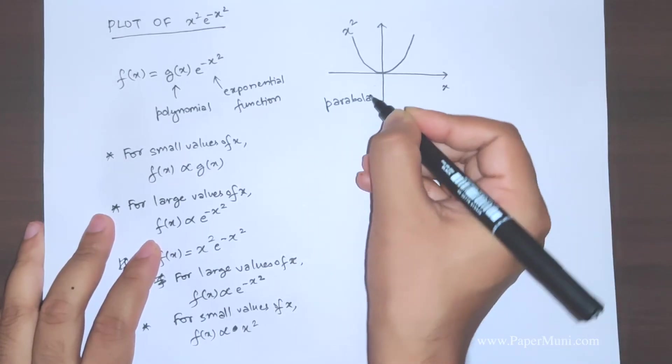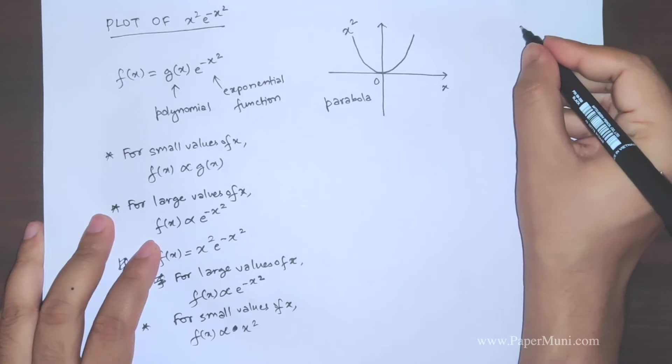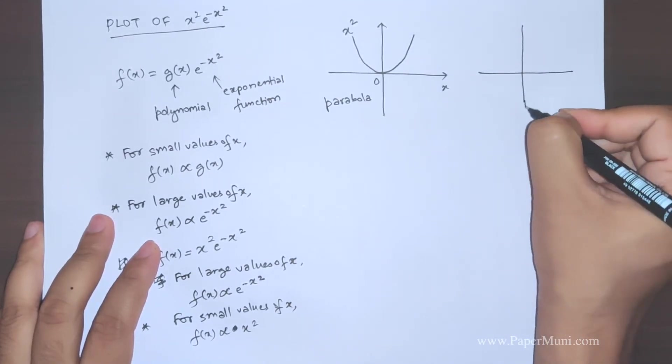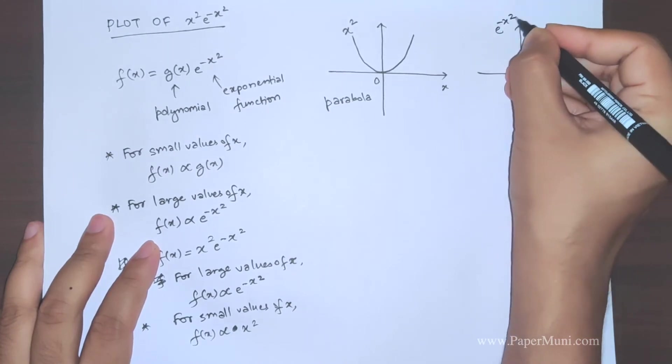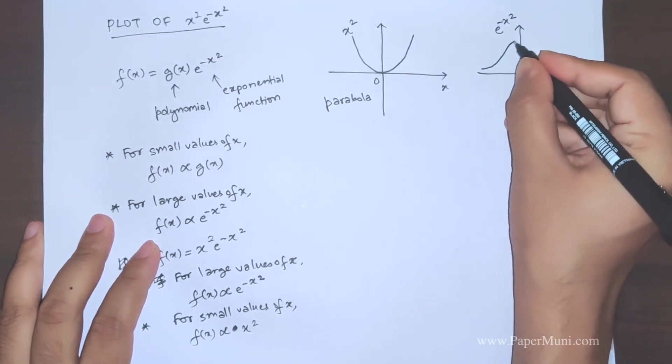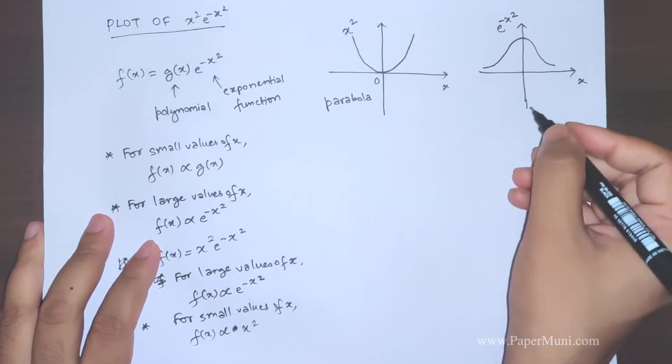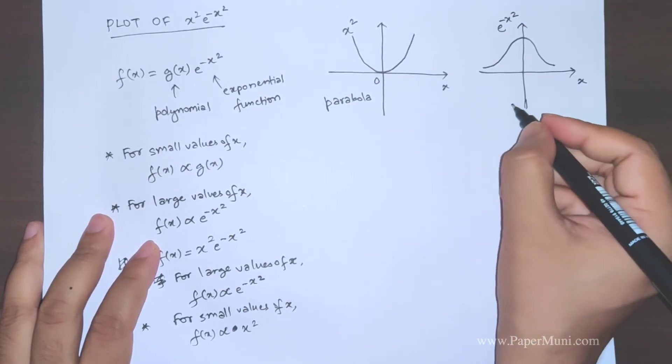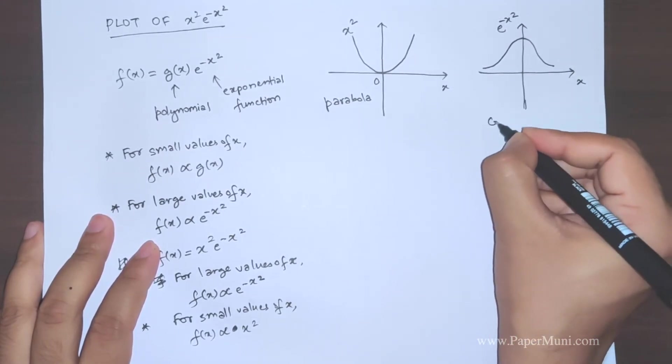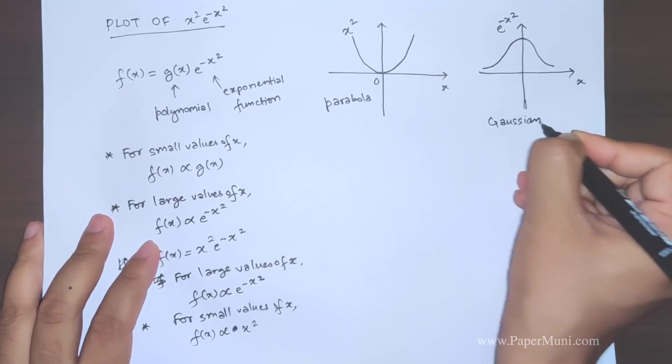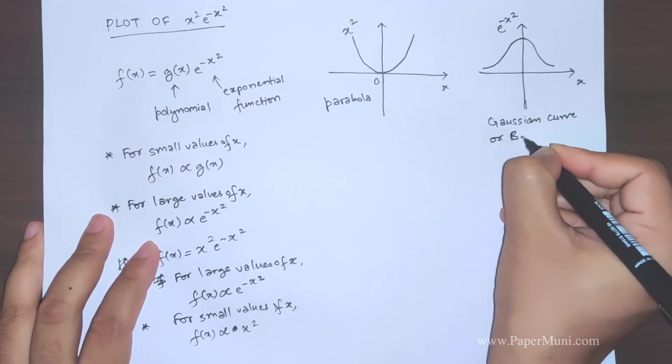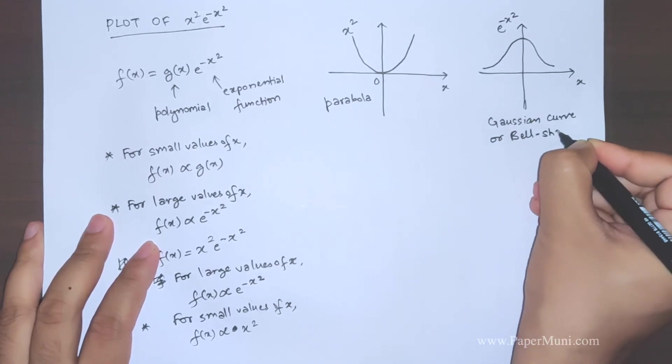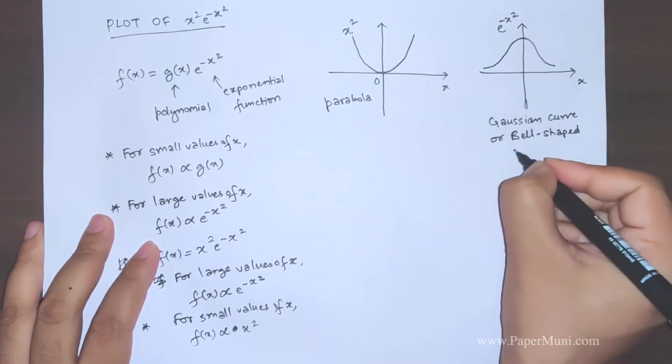Now the other graph is that of an exponential function which looks like this. It's a bell-shaped curve, you will come across this graph many times. This is called the Gaussian curve or bell-shaped curve.